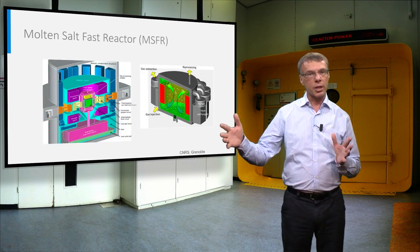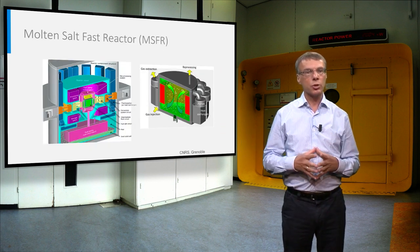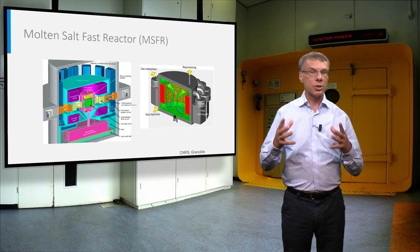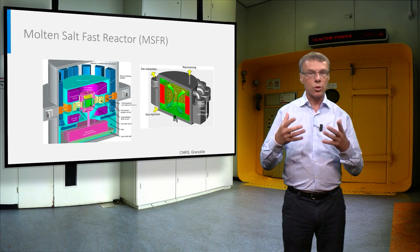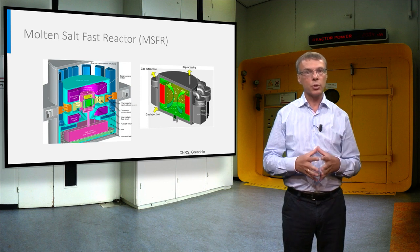Nowadays, several European countries work together on the molten salt fast reactor, which has no graphite in the core. This reactor could also destroy the nuclear waste of current light water reactors.